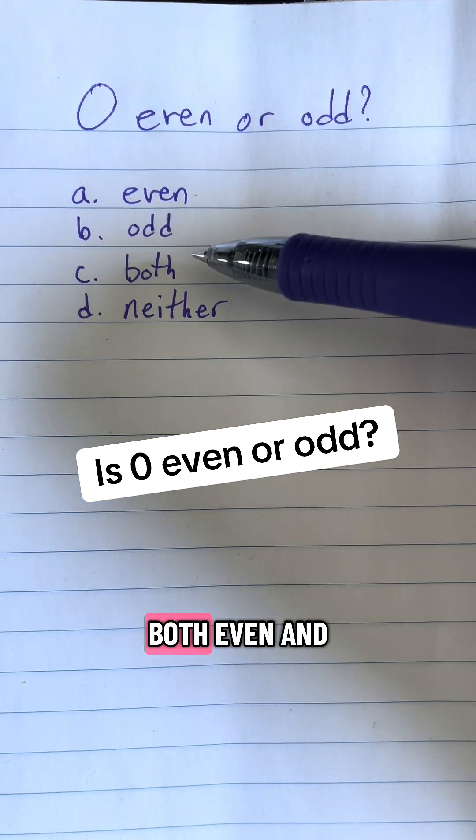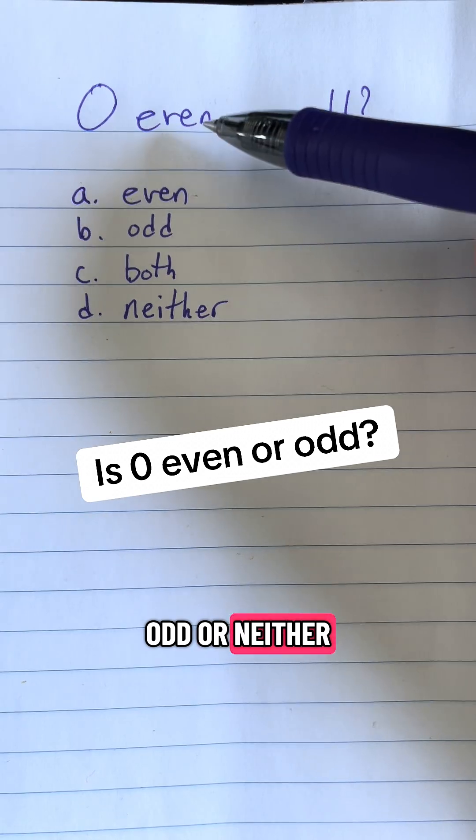Is the number zero even, odd, both even and odd, or neither even nor odd?